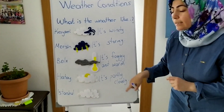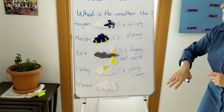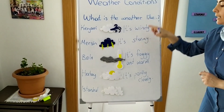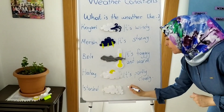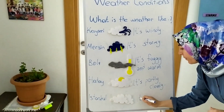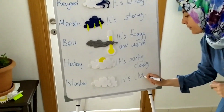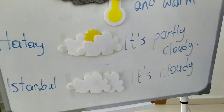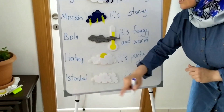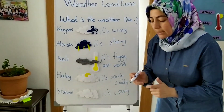The last exercise is about Istanbul. Look at the picture. What is the weather like in Istanbul? It is cloudy. It is cloudy in Istanbul. Or: the weather is cloudy in Istanbul.